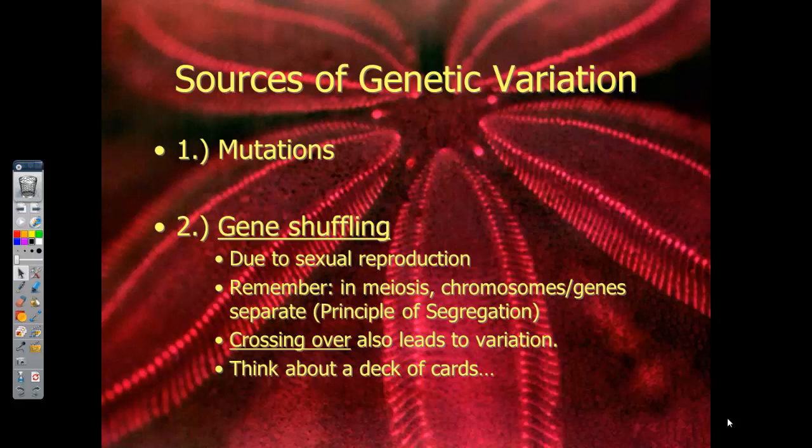Sources of genetic variation: the number one cause of genetic variation is mutations. We know that mutations can be good or they can be bad. They're just minor changes in the overall genetic material, and they can cause things like dimples or things like sickle cell.